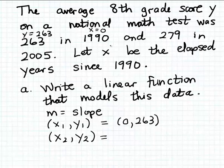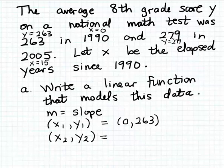The second point is also quite obvious. In 2005, the math score had risen to 279. The year 2005 corresponds to x = 15, because 2005 is 15 elapsed years after 1990. The matching y value when x is 15 is 279 — that was the test score in 2005. So our second point is (15, 279).